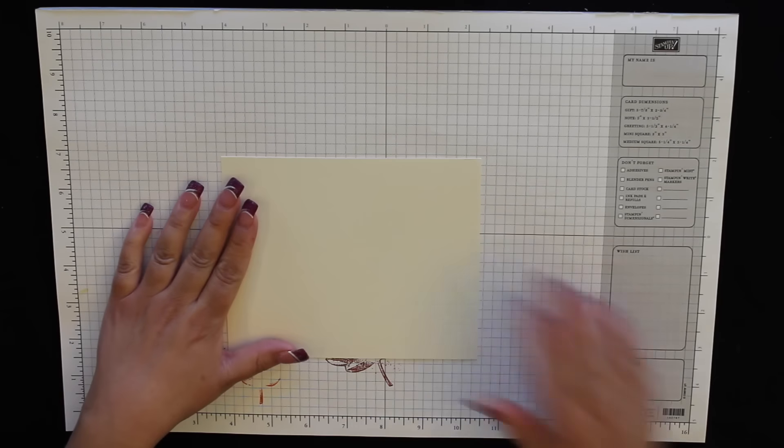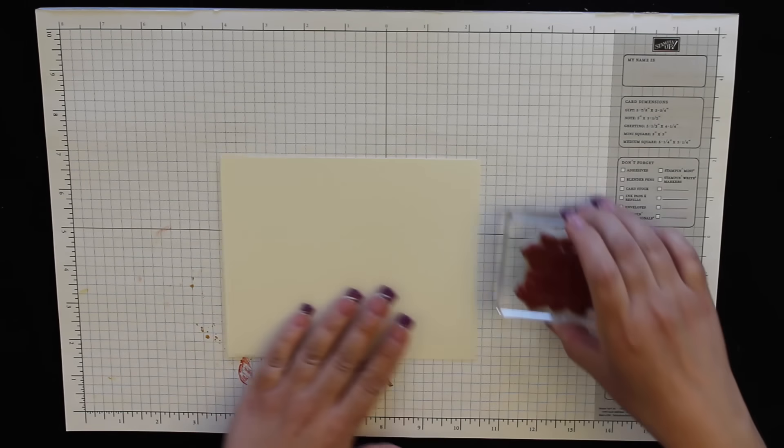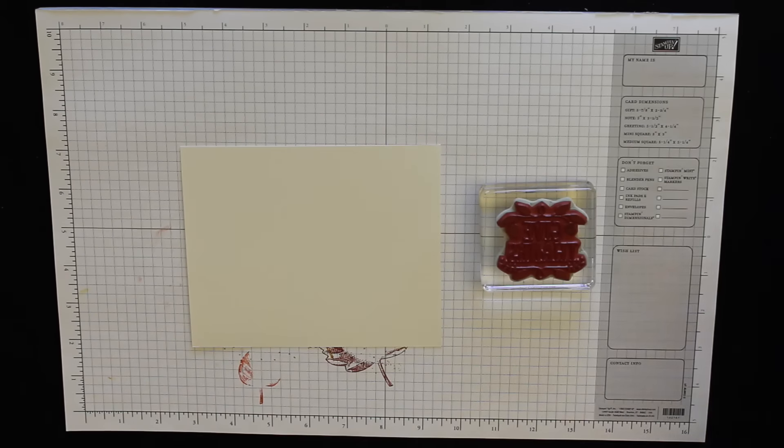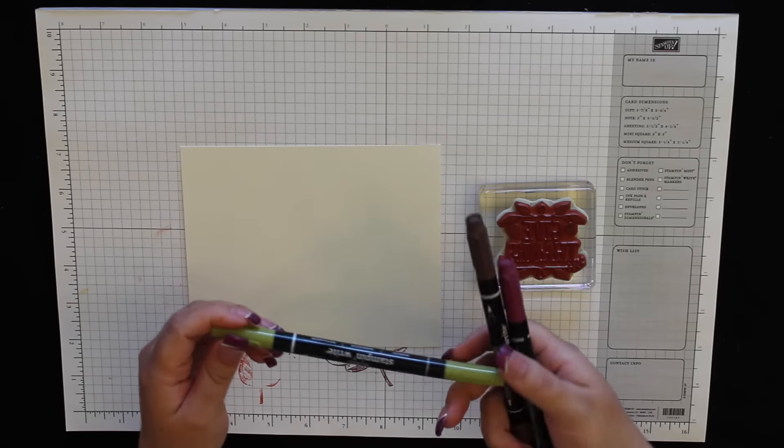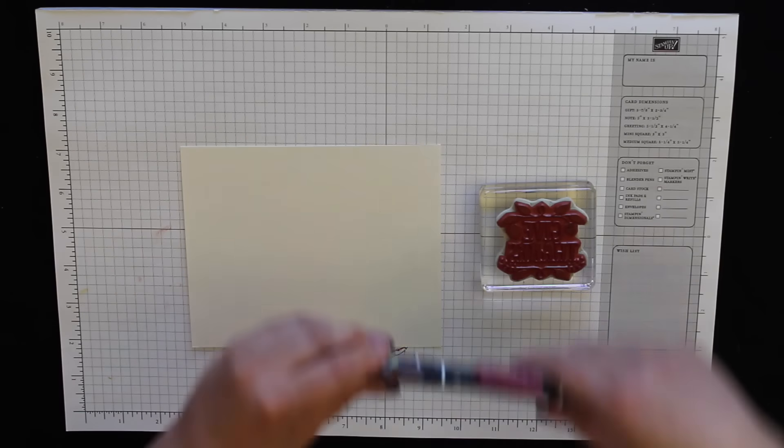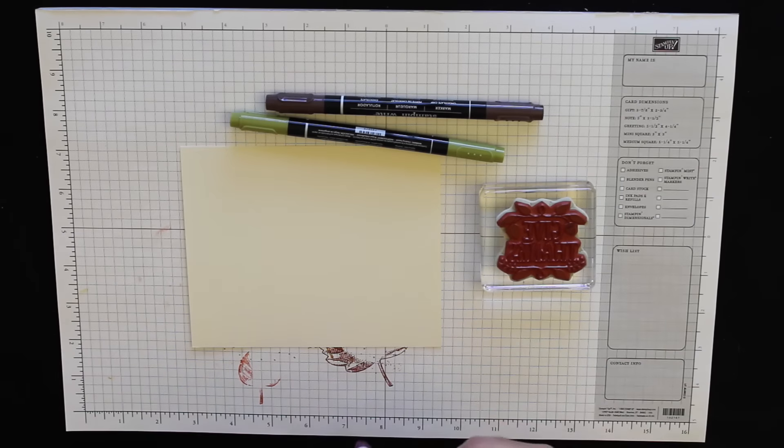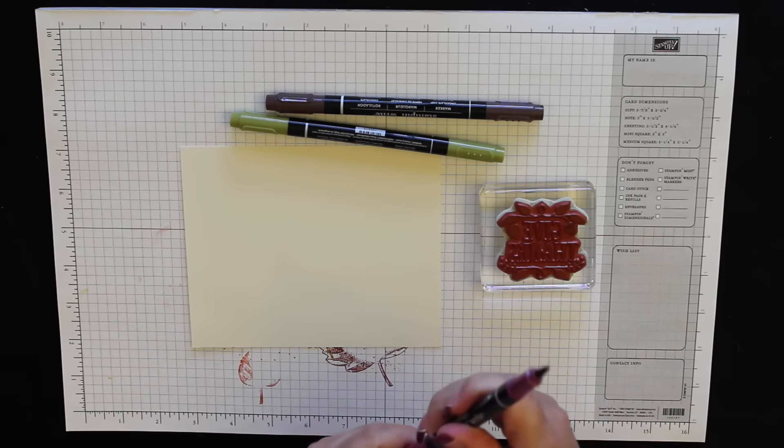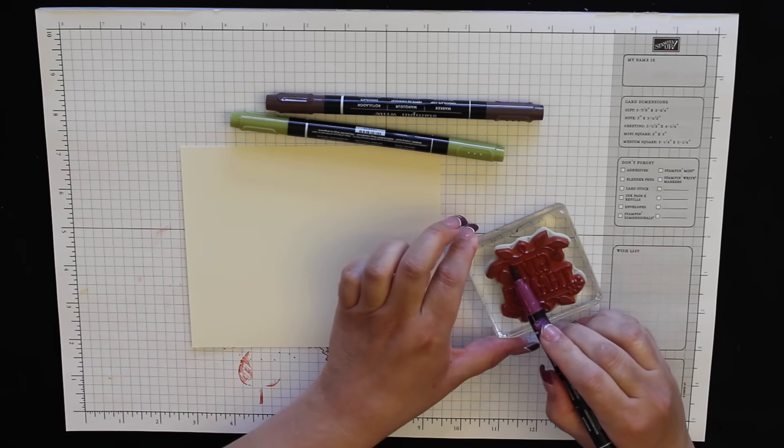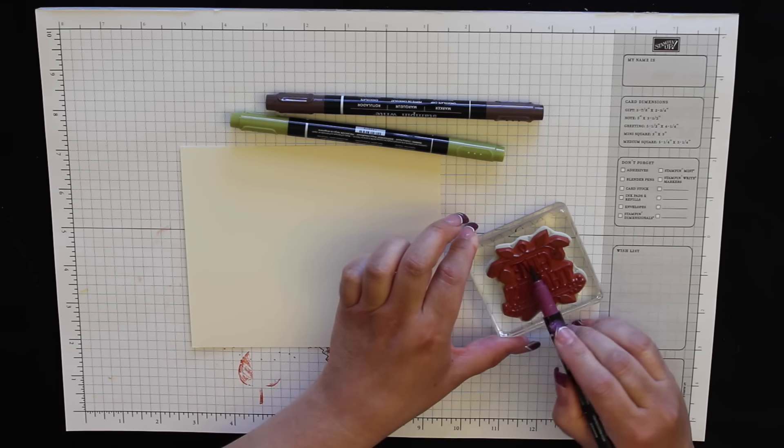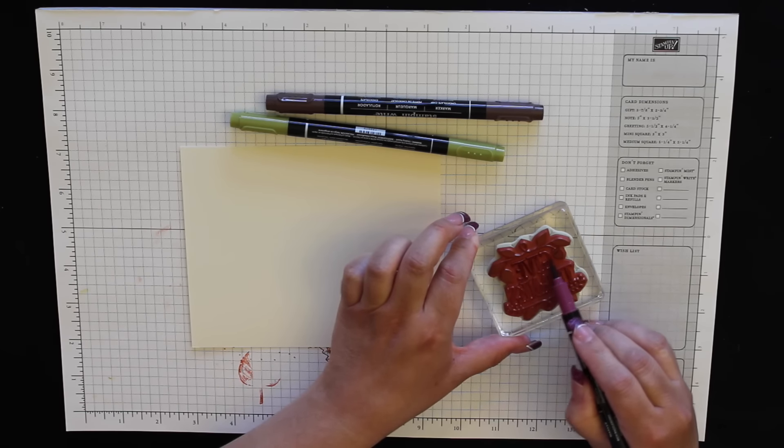All right, now this piece is done and we'll set that aside for the moment. Okay, next we need a piece of scrap Very Vanilla cardstock and our Give Thanks image from the Thankful Forest Friends stamp set. I'm using three markers: Old Olive, Chocolate Chip, and Rich Razzleberry. You always want to use the brush tip. I'm going to ink up the word Give Thanks in Rich Razzleberry.